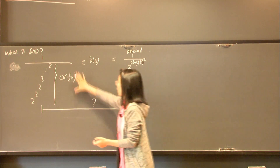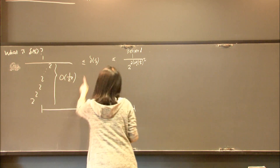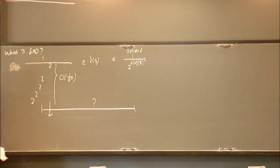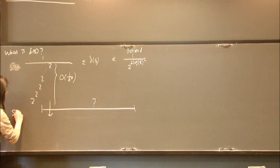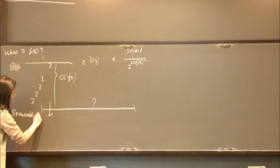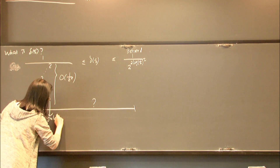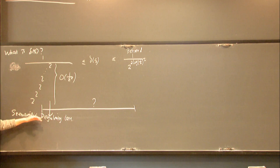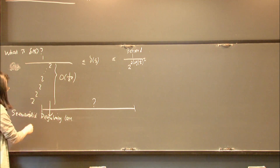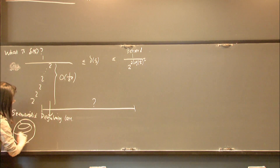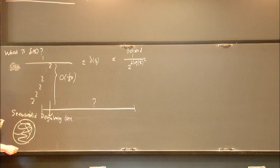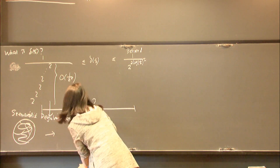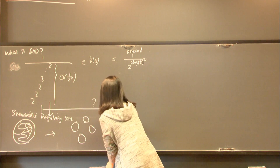Where does the tower-type bound come from? It comes from the original proof of the triangle removal lemma, which uses a big hammer in graph theory called Szemerédi's regularity lemma. Basically, for any graph G on n vertices — which may look very messy — you can always find a partition of the vertices into a small number of equal-sized parts, say m parts, each of size roughly n/m.